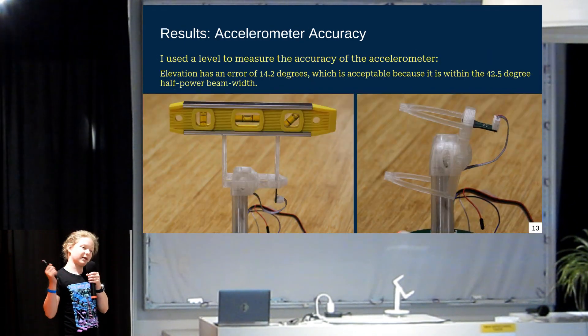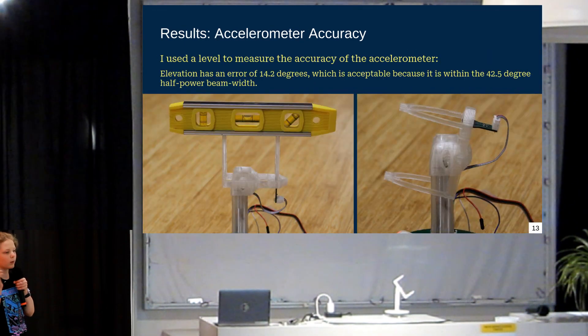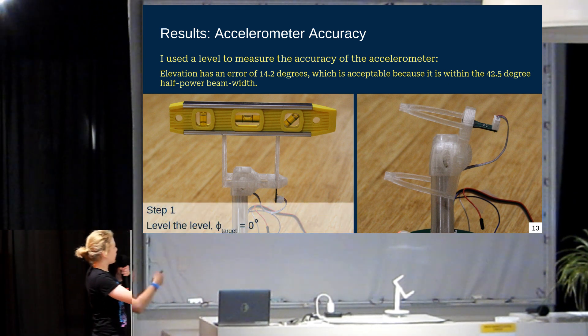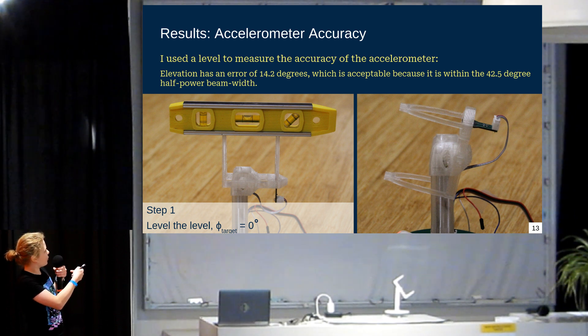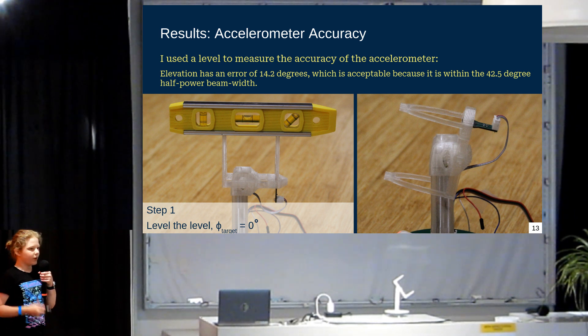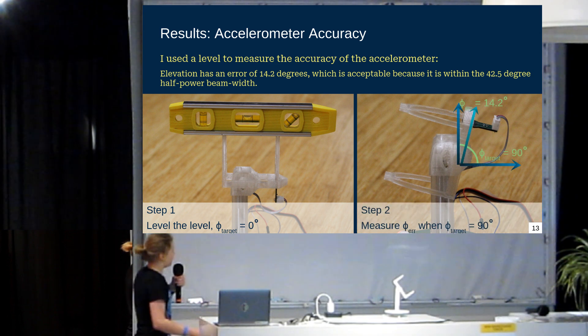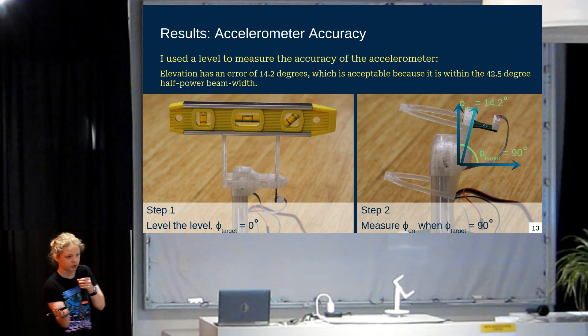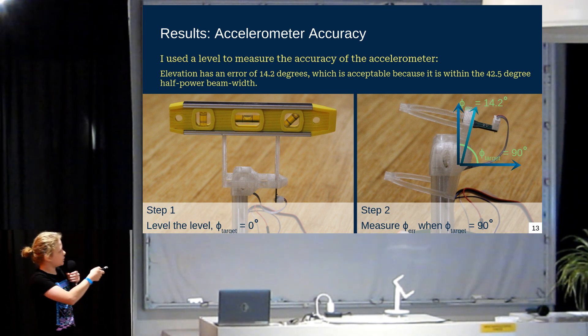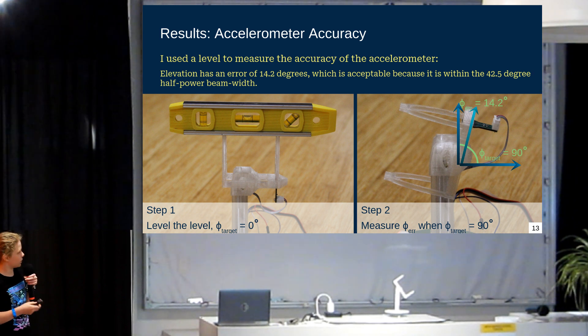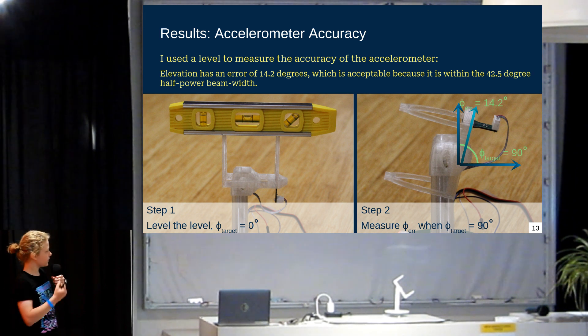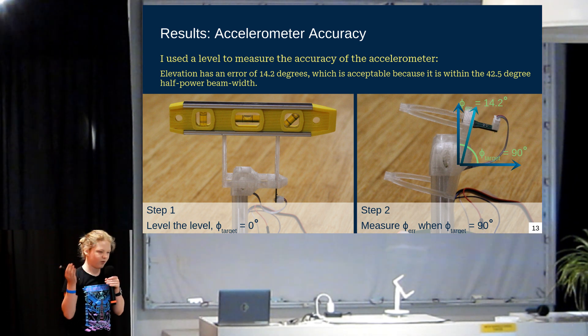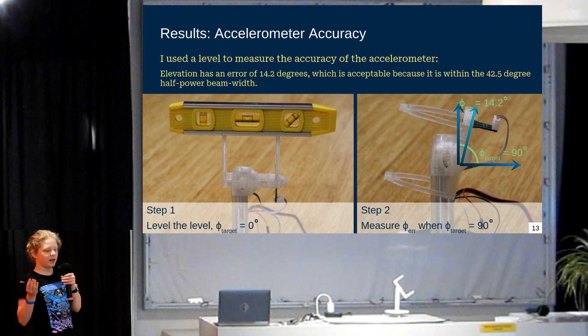And so, now that we know that my magnetometer is accurate enough, I wanted to make sure my accelerometer is accurate enough. So, first what I did is I offset it until the level was leveled, and the bubble was right in between those lines. And then, I took it, and I rotated it up to where it thought was 90 degrees, and I measured 14.2 degrees of error when I took a picture of it and moved that arrow. And 14.2 is still way less than 42.5, my half-powered beam width, but I wanted to make it even less.